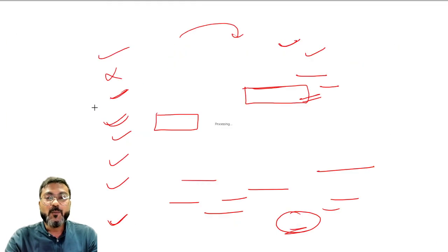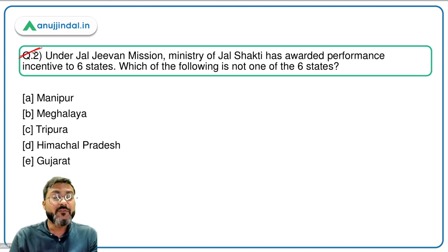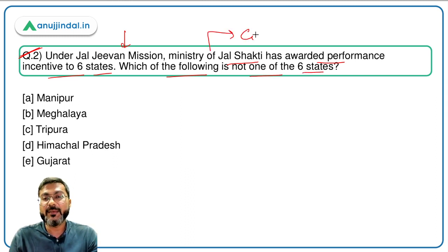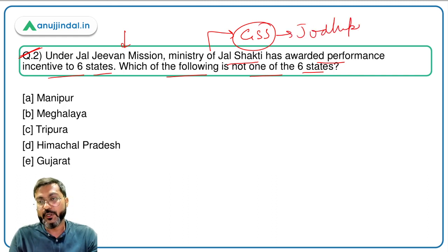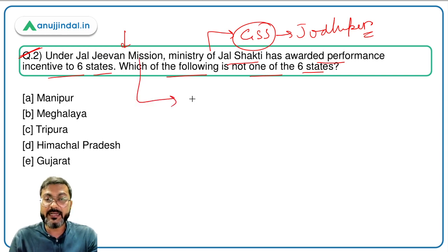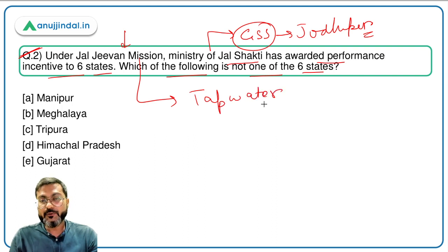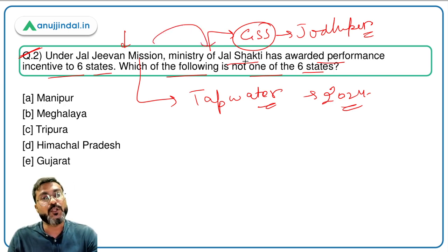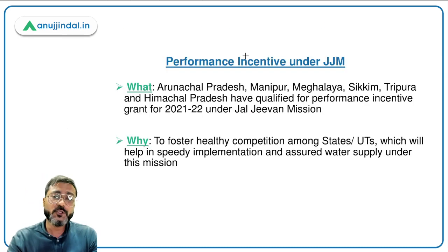Question number two: under Jal Jivan Mission, the Ministry of Jal Shakti has awarded performance incentives to six states — which of the following is not one of those six states? The Ministry of Jal Shakti is headed by Mr. Gajendra Singh Shekhawat, whose Lok Sabha constituency is Jodhpur in Rajasthan. Under Jal Jivan Mission, the government has a target to provide tap water connections to all rural households by the year 2024, and it is being implemented by the Ministry of Jal Shakti.